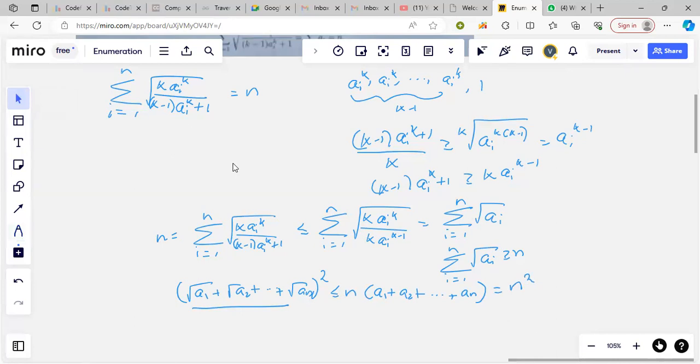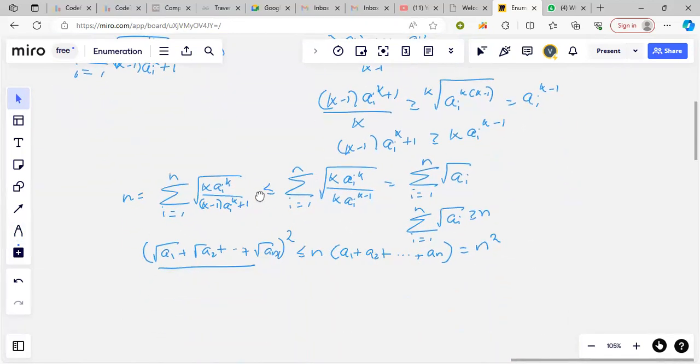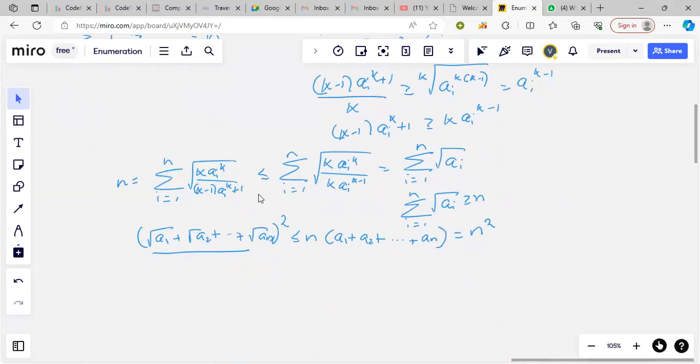Using this, what we get is that sigma i going from 1 to n, root of a i, is at most n, which is exactly what we also have from this inequality. So we must have equality everywhere.